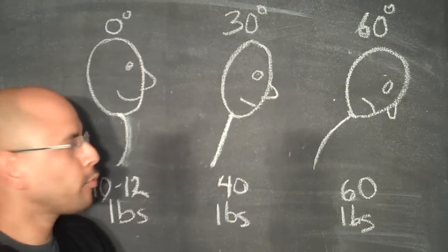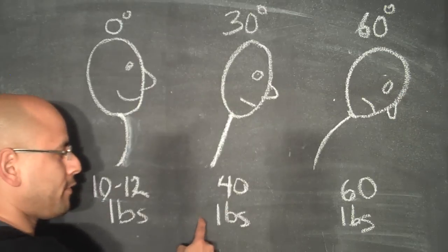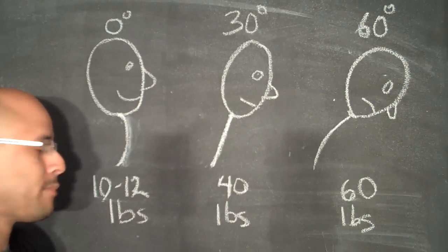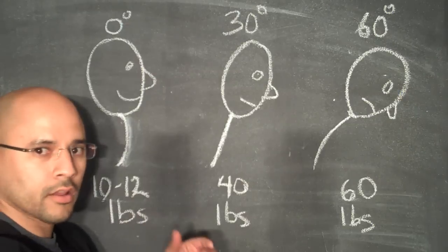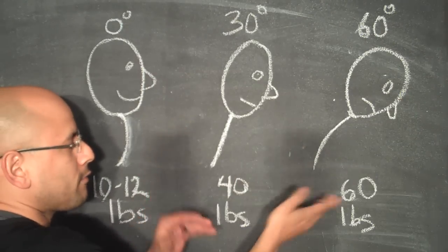However, now when we're leaning forward 30 degrees, our head feels like it weighs 40 pounds. So the muscles back here are having to work all day to prevent that head from falling forward.